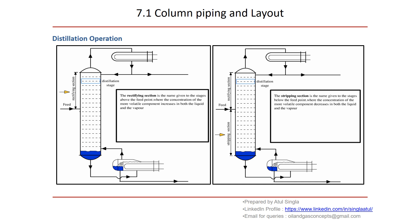Now let us understand the rectifying section and the stripping section. The rectifying section is the name given to the stages above the feed point — whatever portion of the column is above this point. Whatever is below is called the stripping section. In the rectifying section, the concentration of more volatile components increases. The stripping section is the name given to the stages below the feed point, where the concentration of the more volatile component decreases and the less volatile component becomes concentrated.